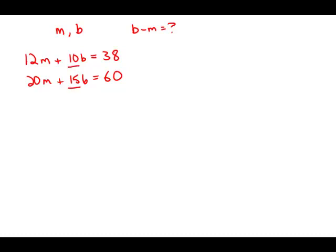Instead, I notice these two coefficients of B, it's very easy to find the least common multiple of them. The least common multiple of 10 and 15 is 30.